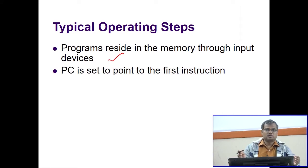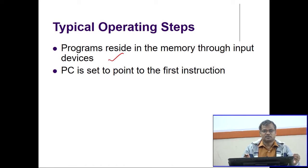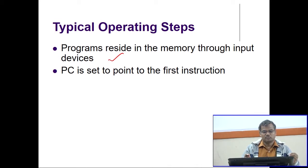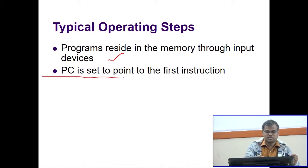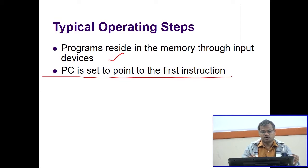Then the program counter is set to point to the first instruction. As I said in the last class, whenever you want to execute a program — say you run ./a.out — what will happen? The starting address of the program, that starting location, will be loaded into the program counter. So the program counter value will be the starting location of the first instruction.